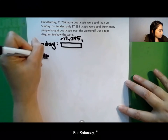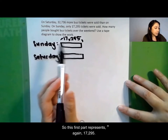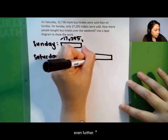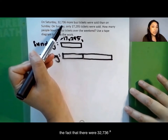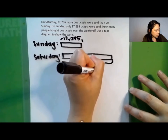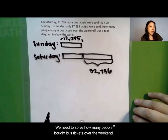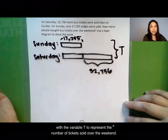For Saturday, we know it was more. So this first part represents, again, 17,295. But now I'm going to extend my tape diagram even further. And this larger part represents the fact that there were 32,736 more tickets that were sold on Saturday. I'm going to draw a bracket to the right of our two tape diagrams with the variable t to represent the number of tickets sold over the weekend.